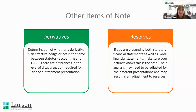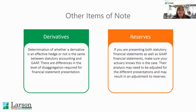A couple of other items to note — they're not necessarily super common and can be pretty specific to each entity, so we didn't dive in too deep. The first is derivatives. If your corporation holds derivatives, be aware that fundamentally there's usually not a difference in determining whether it's an effective hedge or not an effective hedge. That calculation and consideration is usually the same between statutory and GAAP, but there are some significant differences in how they're presented in the financials and some of the disaggregation.